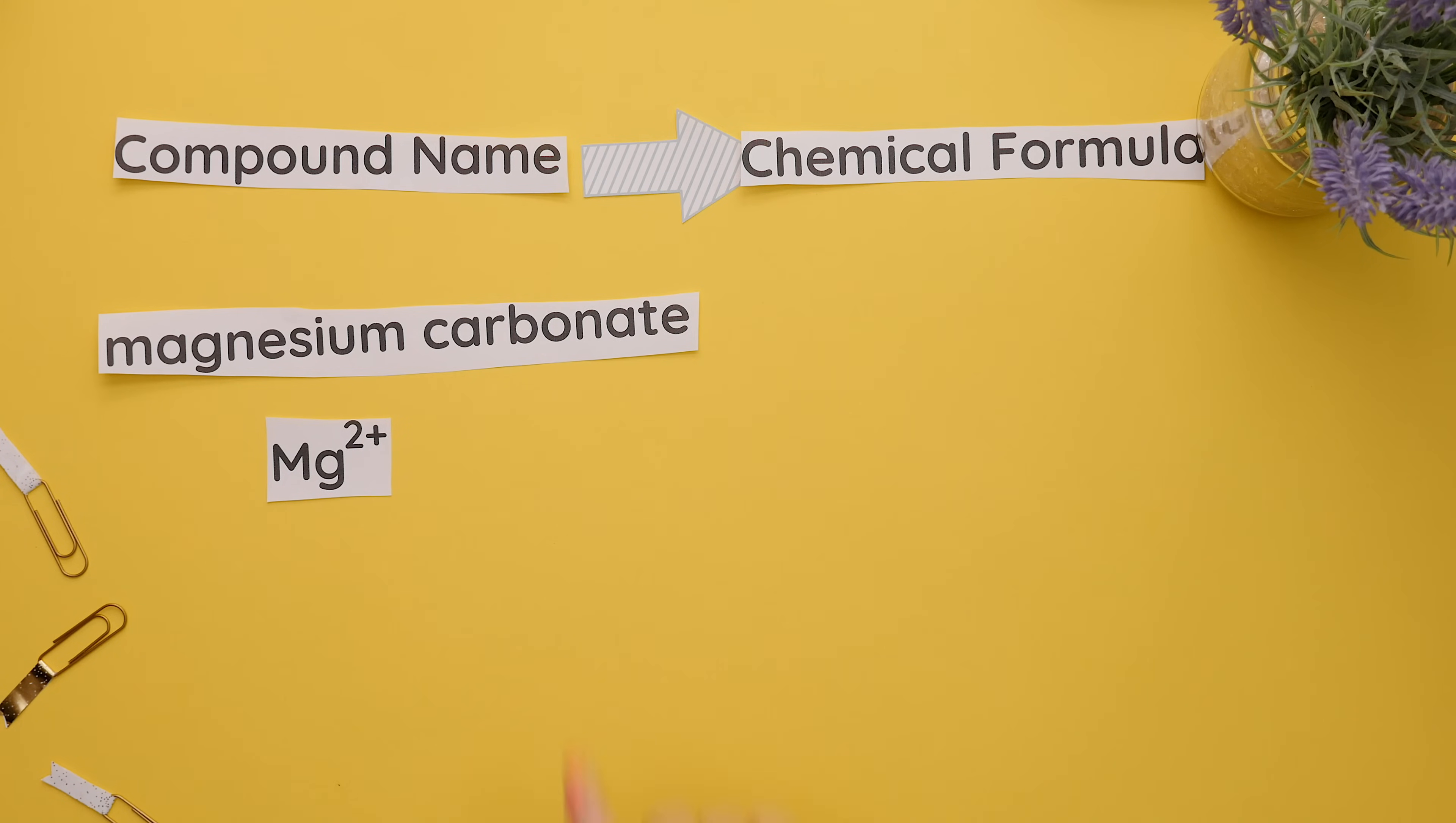Next we'll identify what carbonate is and its charge using our common polyatomic ion table. We'll see that carbonate is CO3 with a 2 minus charge. Since we have the same charges, there is no need for an additional subscript since our charges are already balanced, so this is our chemical formula.